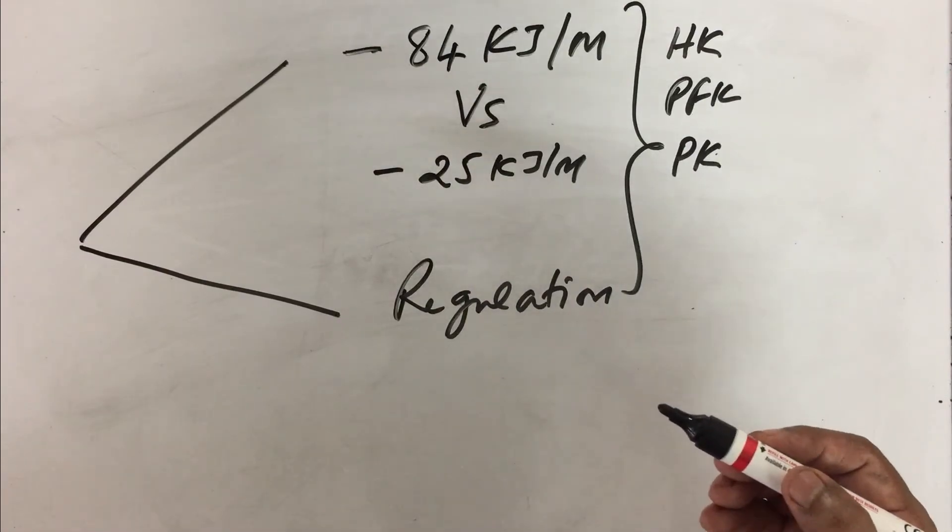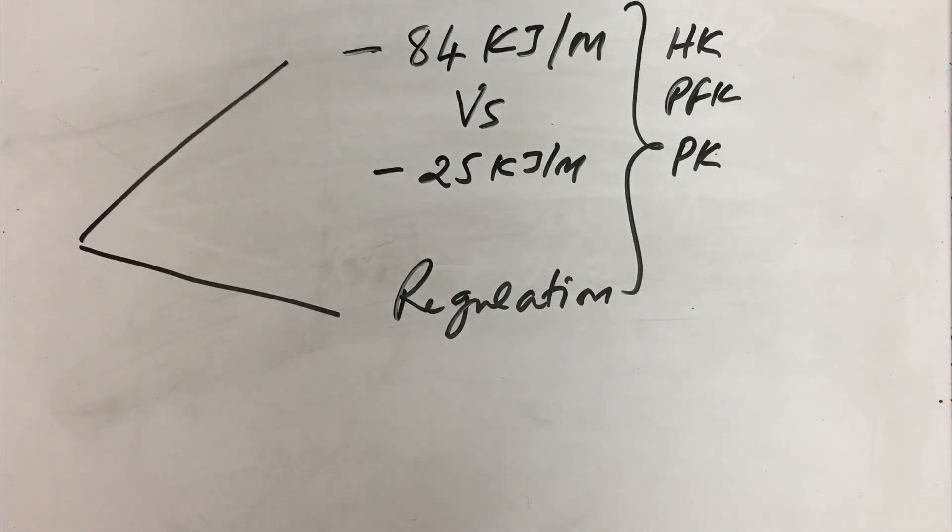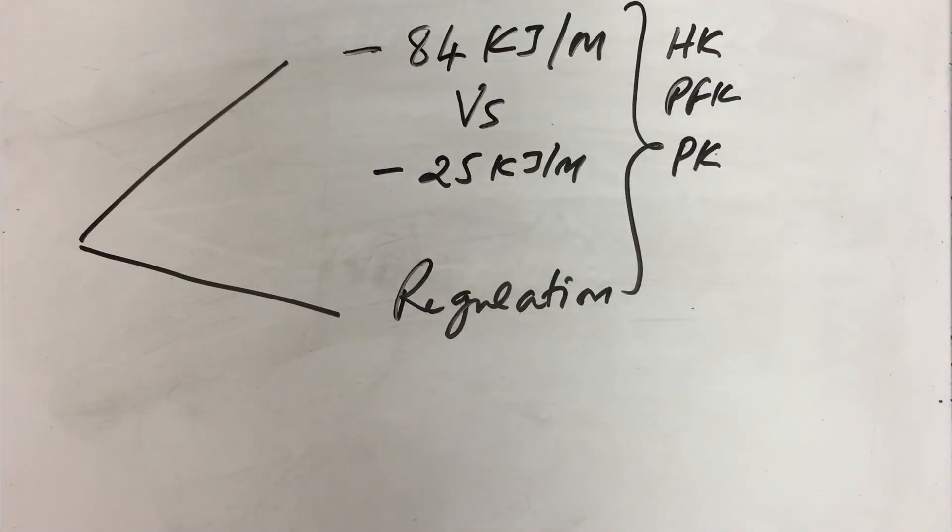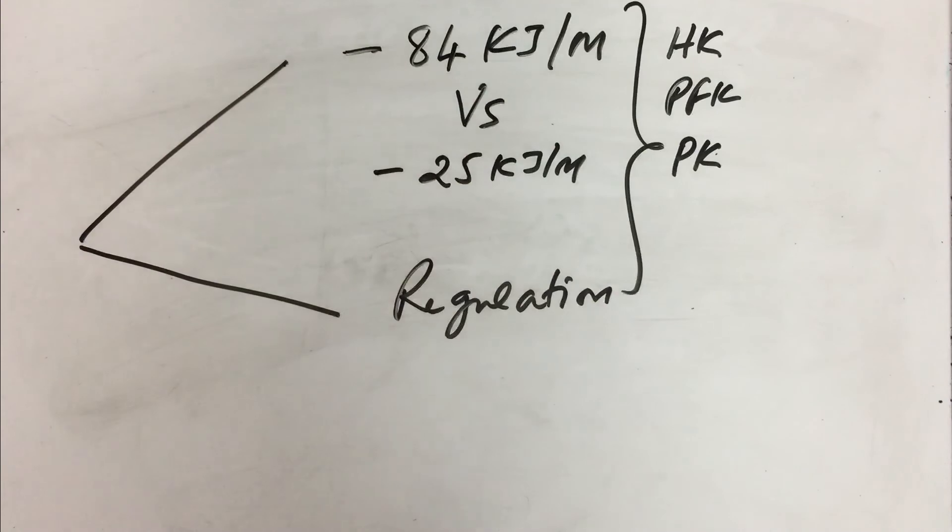You know that these three steps have huge exchange of energy. The first one is about minus 16.7. The second one is about minus 14.6 or something. And pyruvate kinase is almost minus 30, 31 kilojoules of energy exchange. Because of this, the reaction is not exactly the reversal. Only certain steps are reversed.